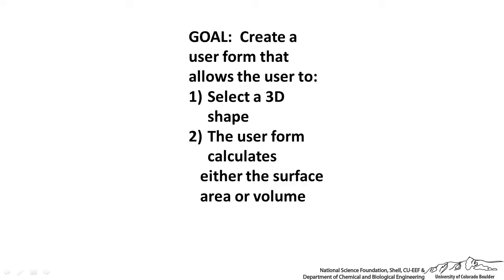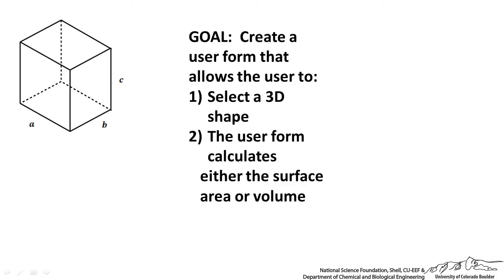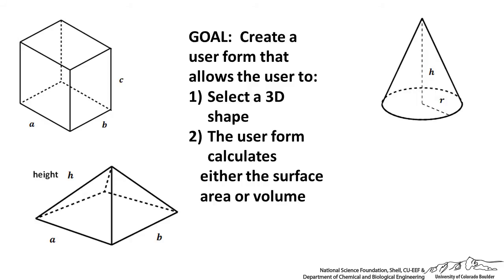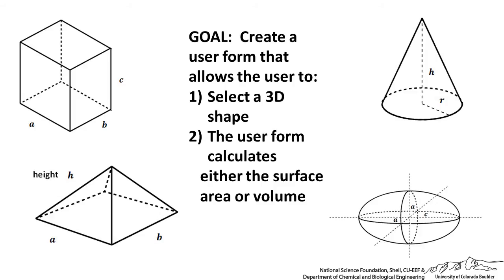We're going to have four different shapes to work with: a rectangular prism, a simple cone, a pyramid with a not necessarily square base — so we can have A and B as the base — but this is a right pyramid with height H. Or we can have a spheroid, which is basically a sphere that's been stretched or compressed.